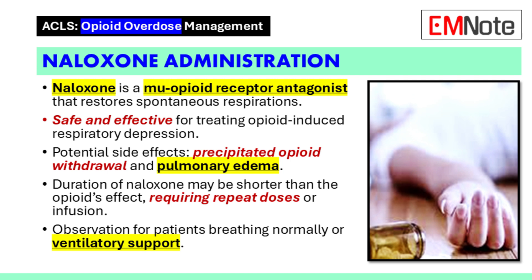Naloxone administration: Naloxone is a mu opioid receptor antagonist that can restore spontaneous respirations and protective airway reflexes in patients when these functions are impaired due to an opioid overdose. Alternatives to naloxone include observation for patients who are breathing normally, regardless of central nervous system depression, and ventilatory support. Naloxone is safe and effective in treating opioid-induced respiratory depression, and major complications are rare and dose-related.